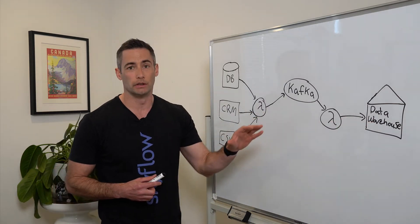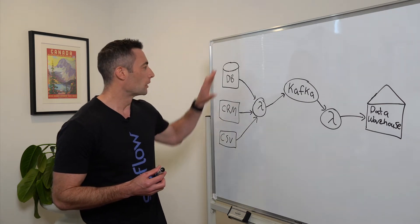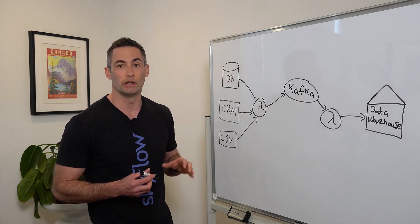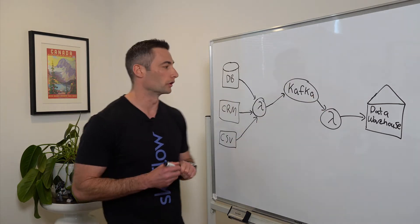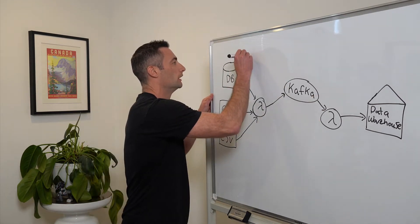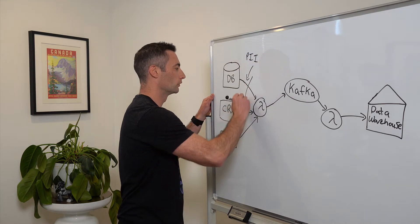So what is the problem here? Well, the problem is from these different sources, we probably have a bunch of customer data, people's phone numbers, email addresses, that's being pushed down and stored in our data warehouse. So we have a bunch of PII coming in here from all these different sources.